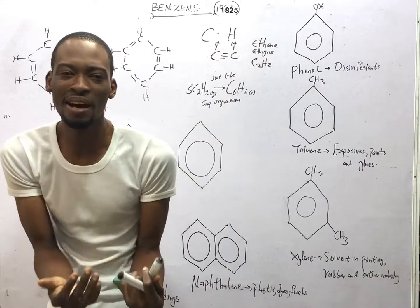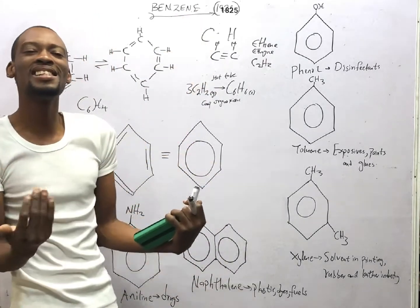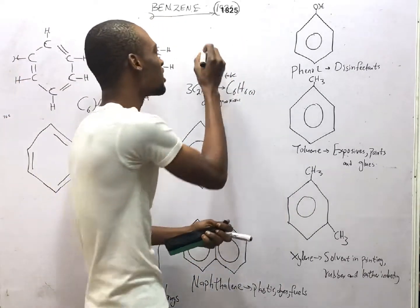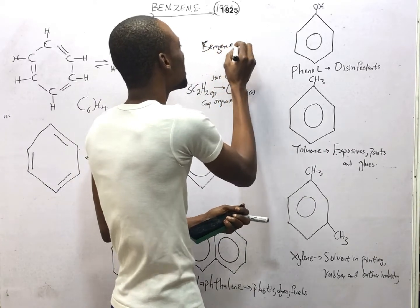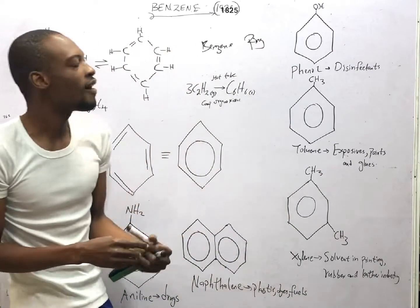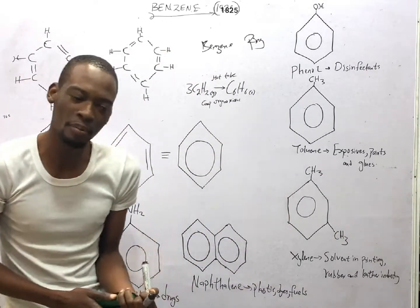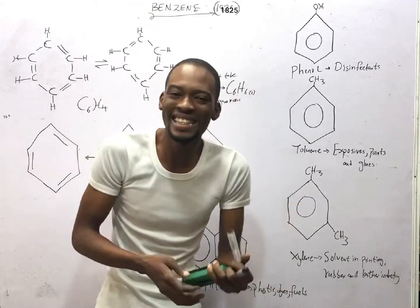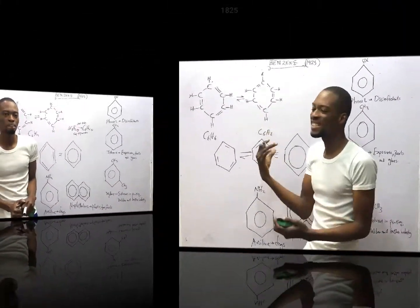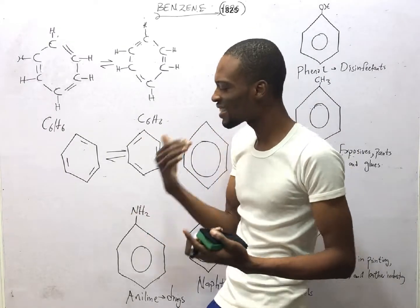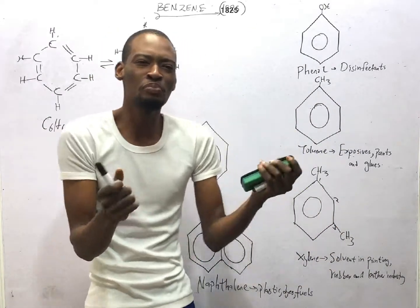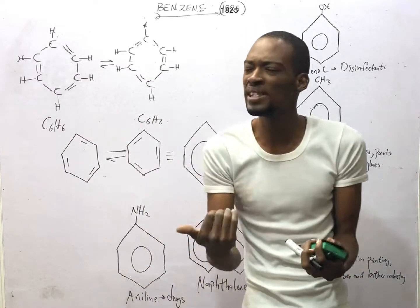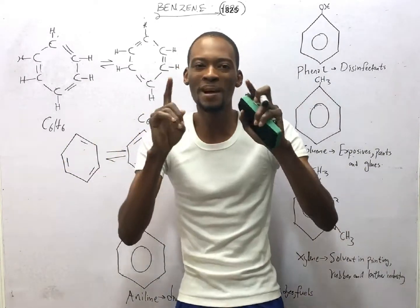Now, aromatic hydrocarbons are benzene and its derivatives. An aromatic hydrocarbon is a hydrocarbon that contains the benzene ring. So what is benzene? Benzene is simply an aromatic hydrocarbon with six carbons and six hydrogens; it has alternating double bonds. Benzene was discovered in 1825, and in 1865 August Kekulé proposed the best structure of benzene.